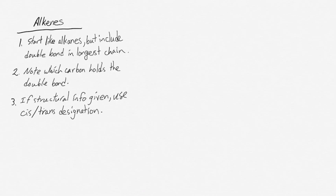The general structure for naming alkenes and alkynes is almost identical to that used for naming alkanes. To begin with, you start exactly as though you were naming an alkane, but you include the double bond in the longest chain. Then you have to note which carbon the double bond starts on, and if any structural information is given, such as a structural formula or a three-dimensional drawing, then use a cis-trans designation as appropriate.